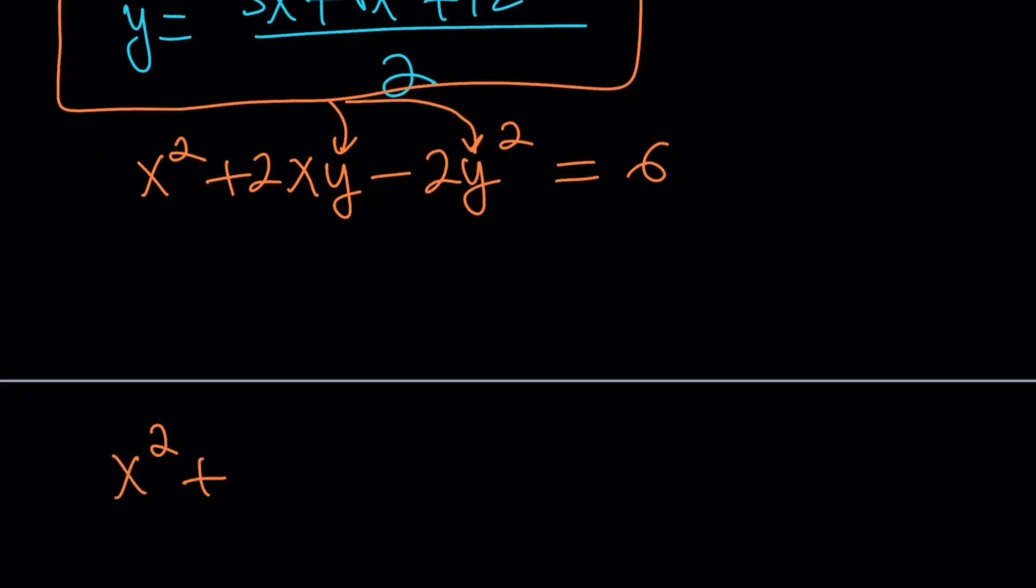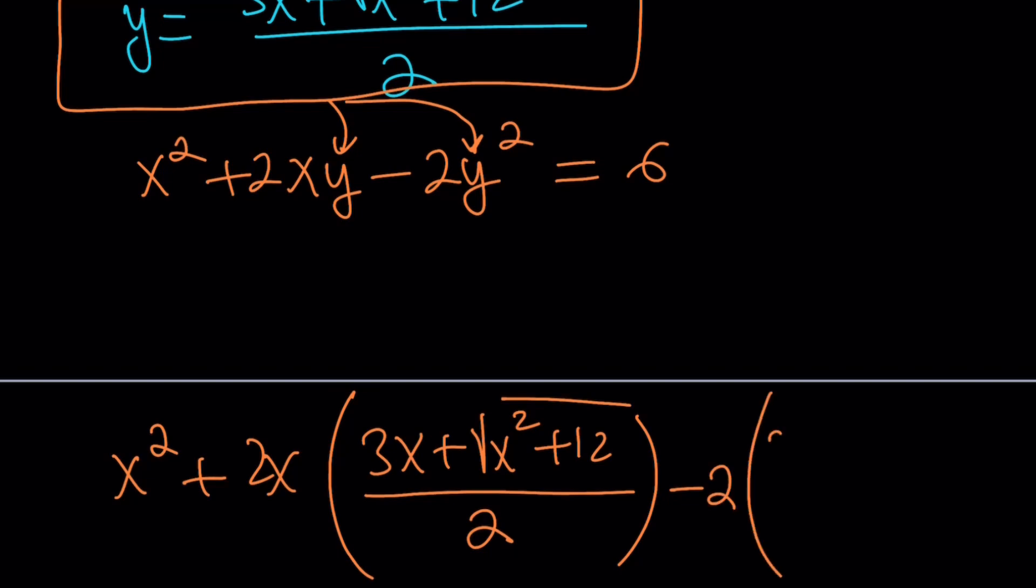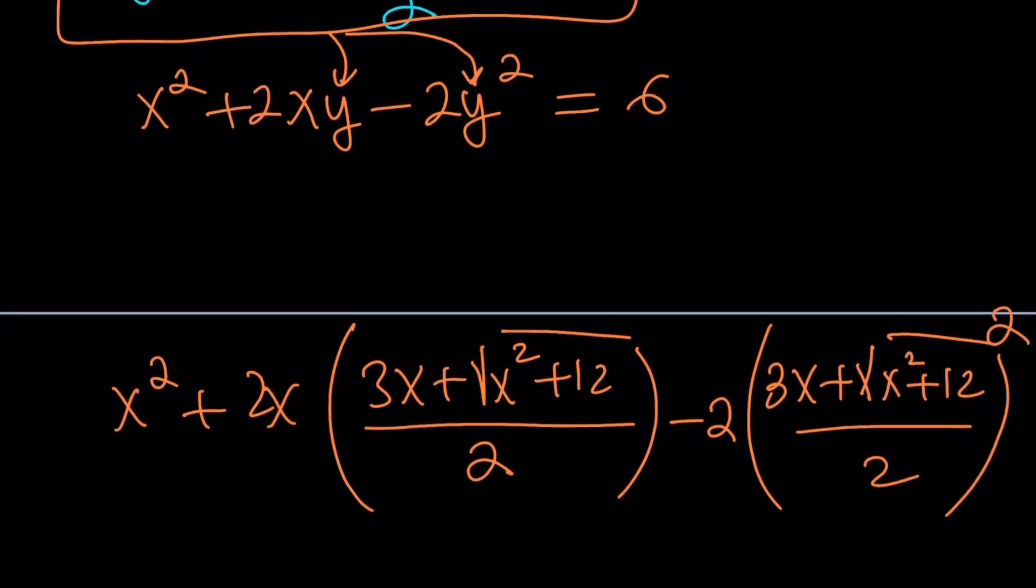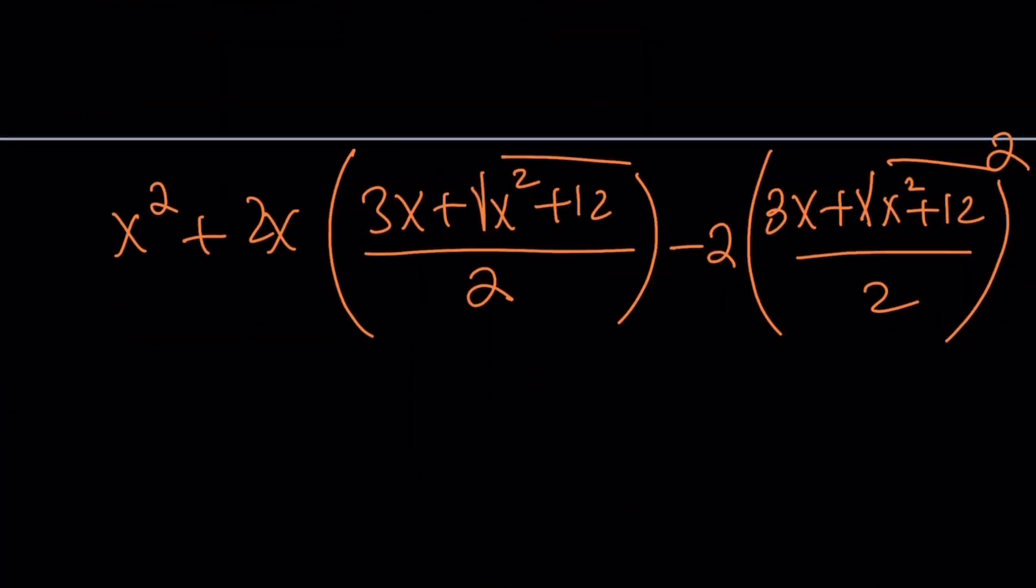Now what do you get if you do that? You get x² + 2x times (3x + √(x² + 12))/2 and then minus 2 times the same expression squared. Because this is the y value and we're supposed to square it. And of course the whole thing is equal to 6 at the end. Let's go ahead and put the 6 here.